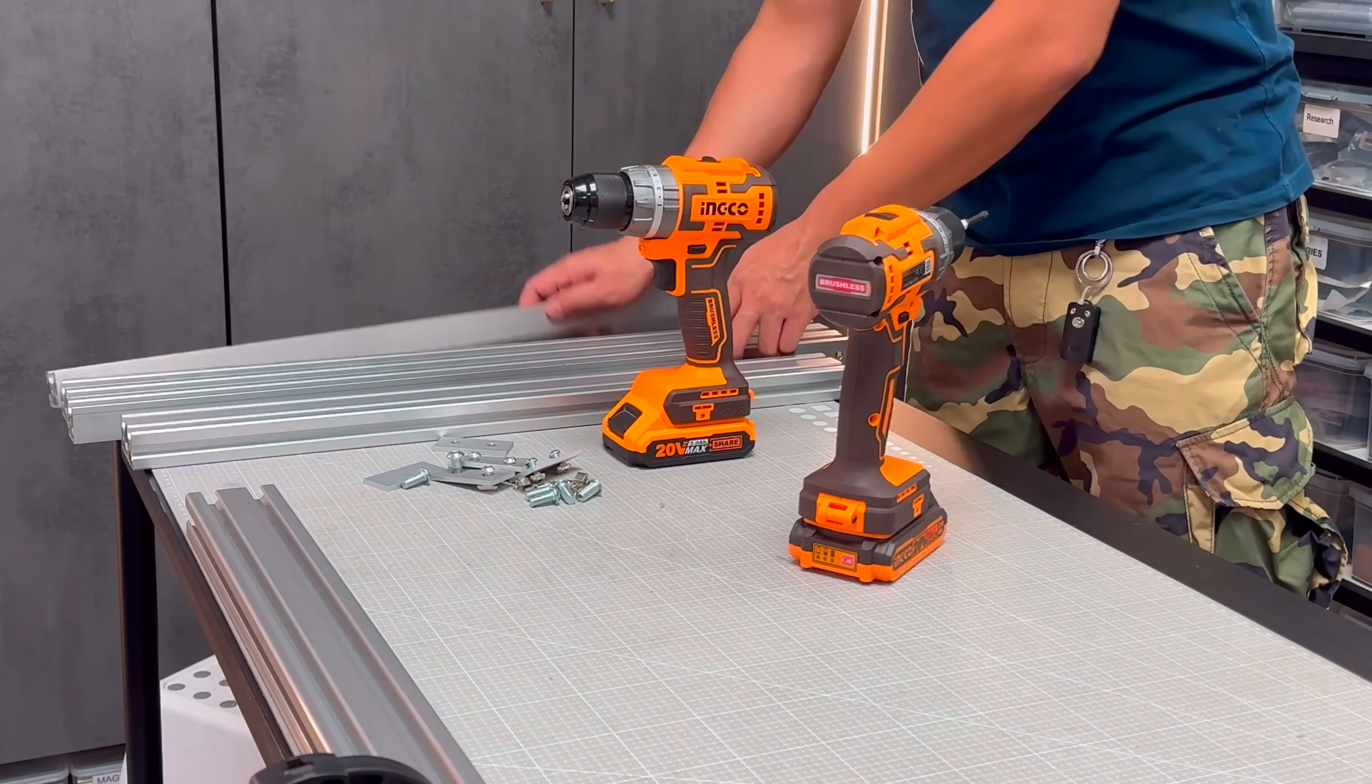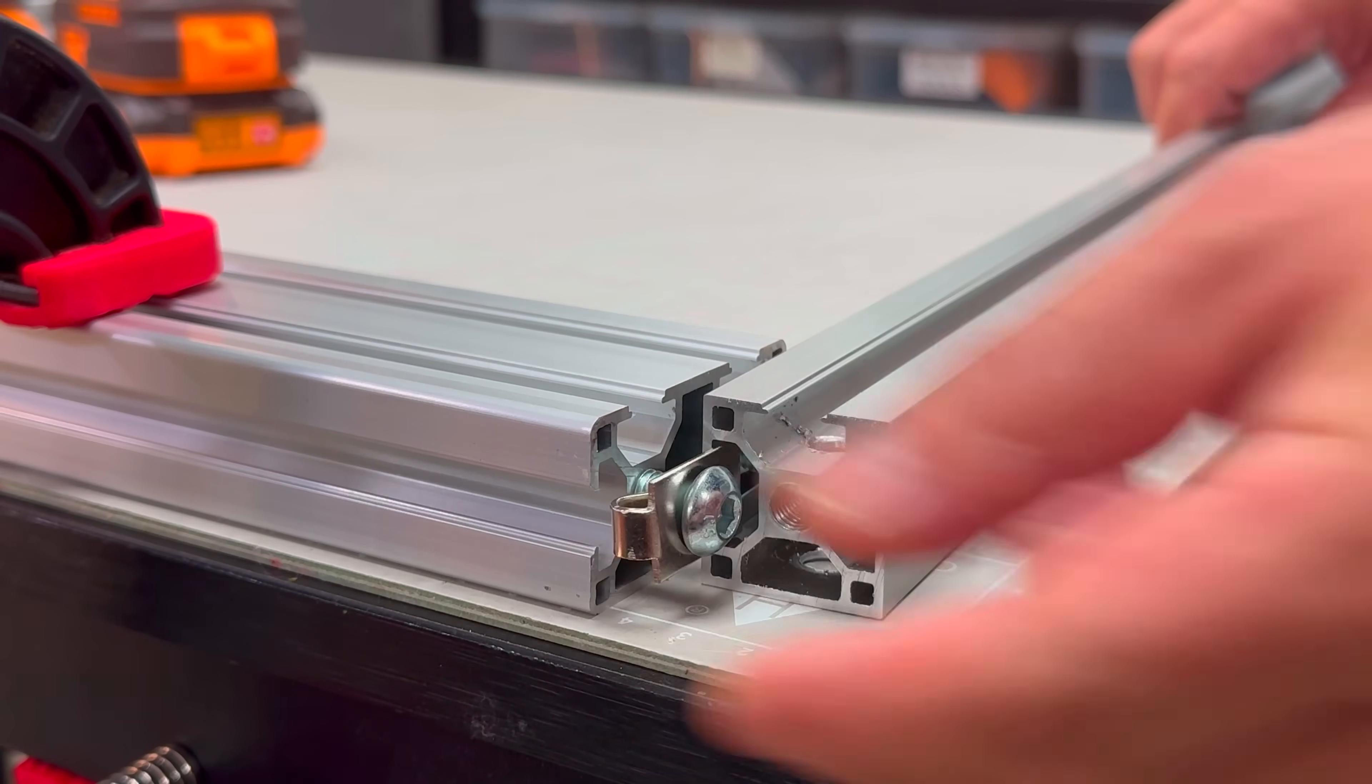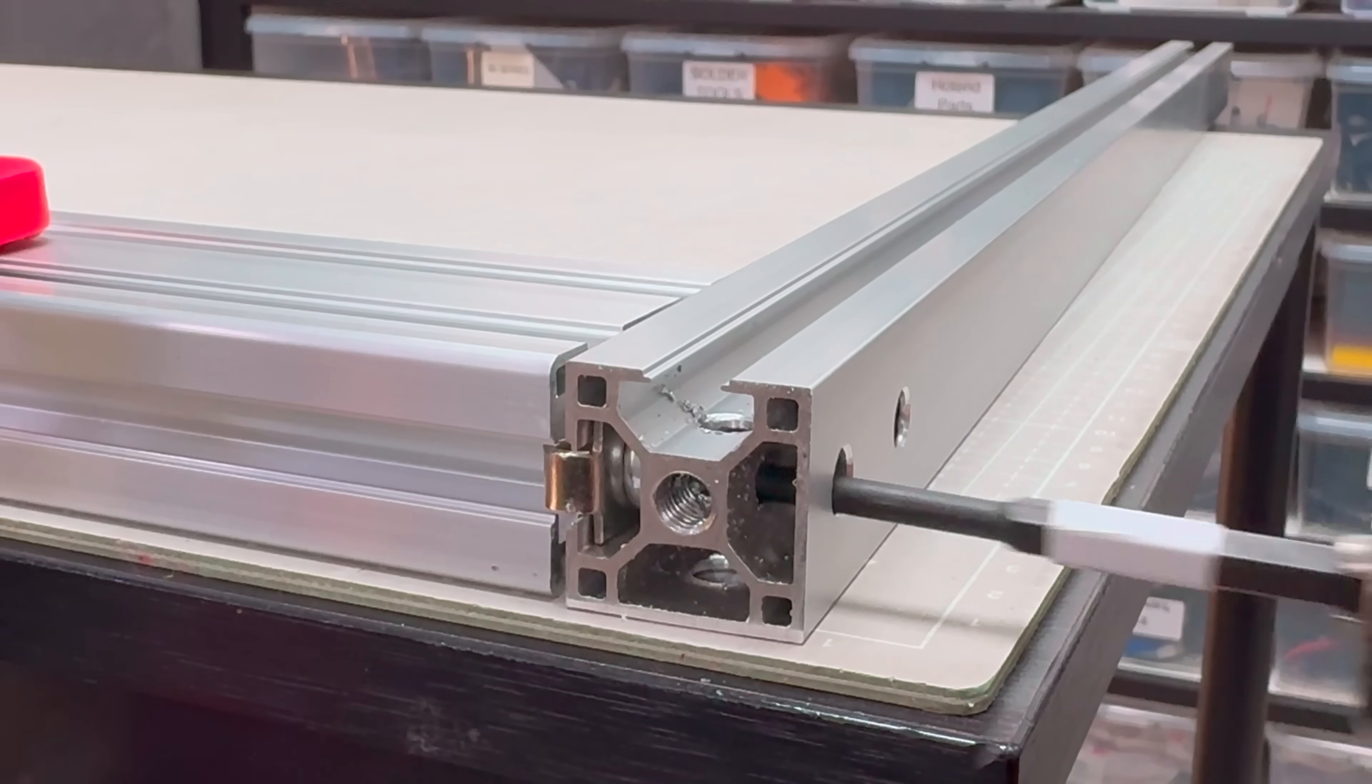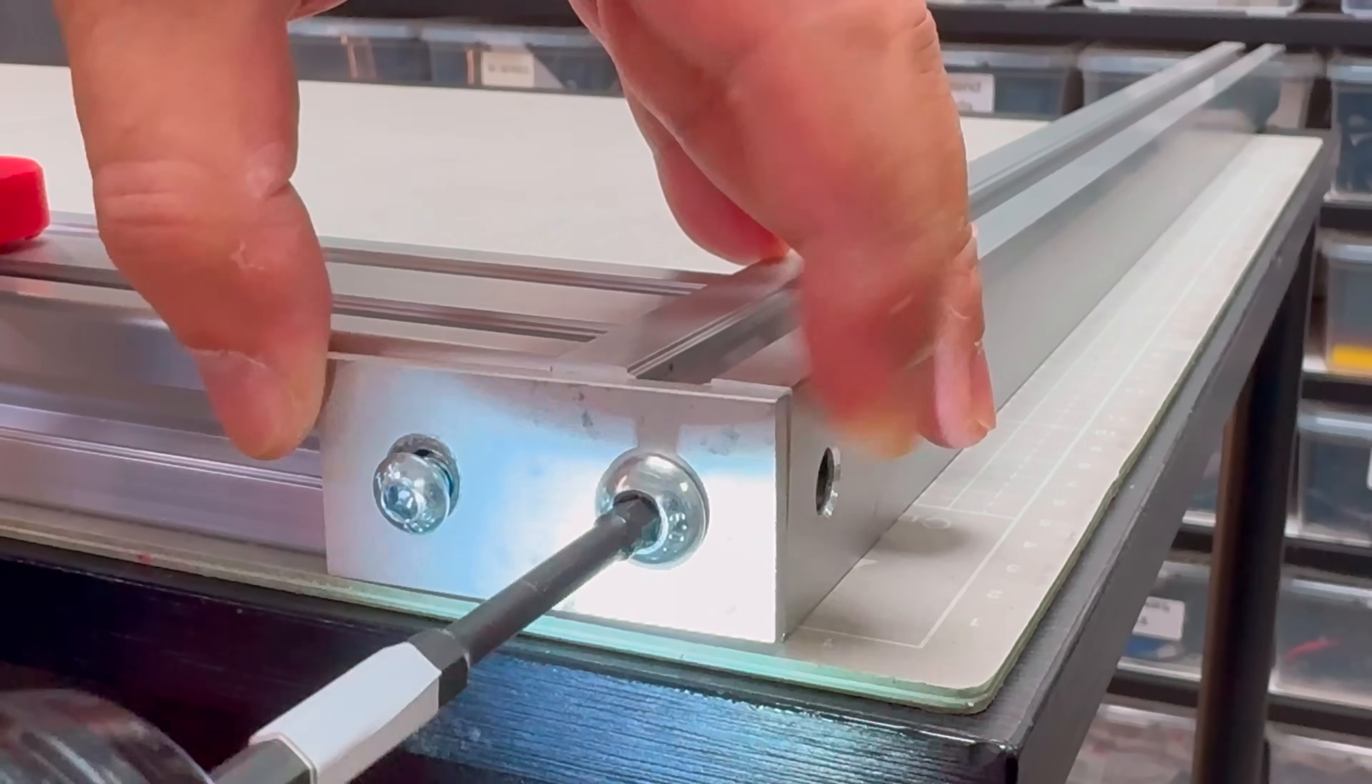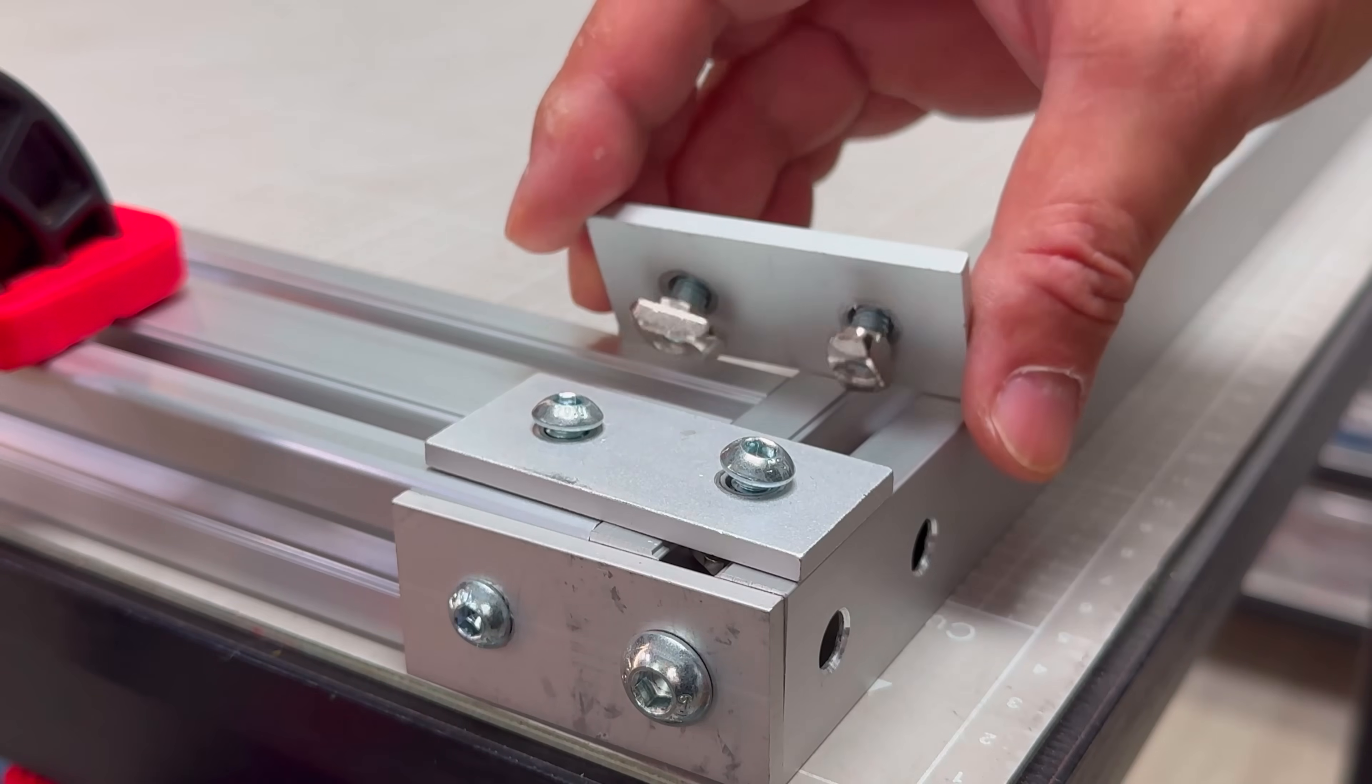With our workpiece securely clamped, we'll begin with the first corner. Each joint requires two internally tightened bolts, exactly what we pre-drilled for earlier. Once positioned, we'll use flush plates to align all sides to the same plane before final tightening. Flush plates are indispensable in my workshop. I use them in every single setup. When applied correctly, they guarantee perfectly aligned aluminum extrusion profiles every time, eliminating all guesswork.